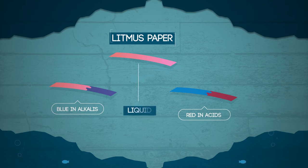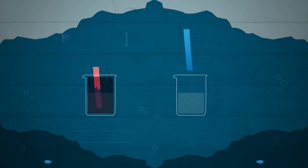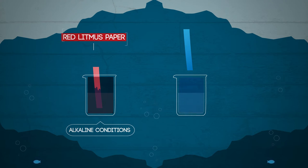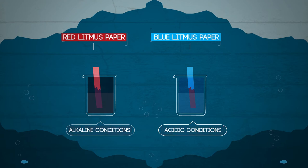It can be used as a liquid or paper, but the paper is easier and more reliable. It comes as red litmus paper and blue litmus paper. Red litmus paper changes colour from red to blue under alkaline conditions but no change under acidic conditions. Blue litmus paper changes colour from blue to red under acidic conditions but no change under alkaline conditions. So just remember that red litmus paper changes colour for alkalis and blue litmus paper changes colour for acids.